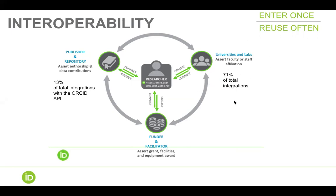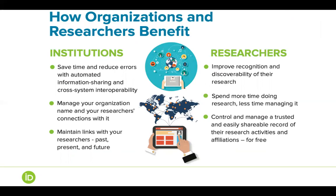Universities represent today 71% of the total integrations from our members, and publishers represent the second in the ranking with 13% of the total integrations with the ORCID API. In a nutshell, what ORCID does is support transparency, trust, reuse, visibility, and interoperability in research information — being a key player for better data and metadata in research.